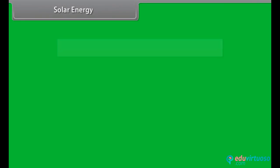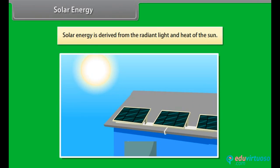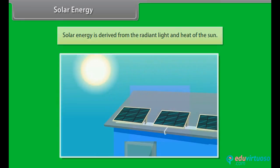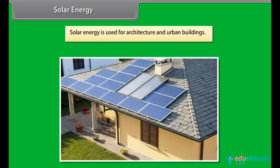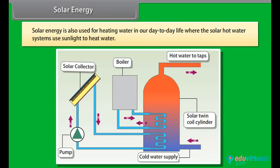Solar energy. Solar energy is derived from the radiant light and heat of the sun. It has been used by humans since ancient times for a range of technologies. Solar energy is used for architecture and urban buildings, and also for heating water in day-to-day life. Solar hot water systems use sunlight to heat water. In low geographical latitudes, domestic hot water needs are met with temperatures up to 60 degrees Celsius by solar heating systems. The most common types of solar water heaters are evacuated tube collectors, glazed flat plate collectors for domestic hot water, and unglazed plastic collectors used mainly to heat swimming pools.